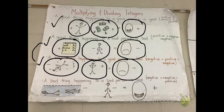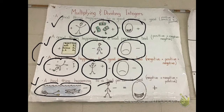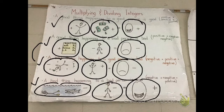Our last one: a bad thing — we have a shark attack here — happening to a bad person. Well, we think that's good. This isn't always the most mindful way of thinking, but it helps us with our rules. So a negative multiplied or divided by a negative will give us a positive result.